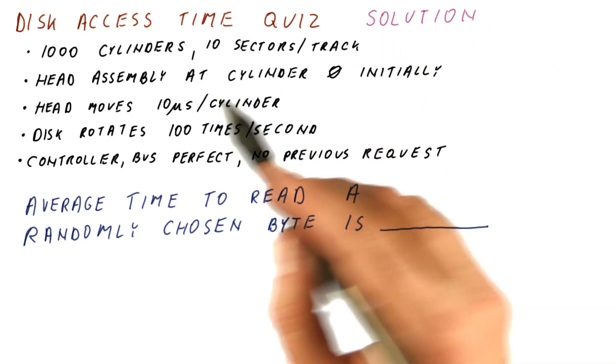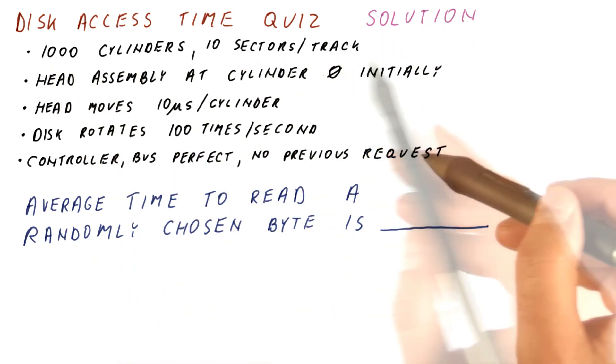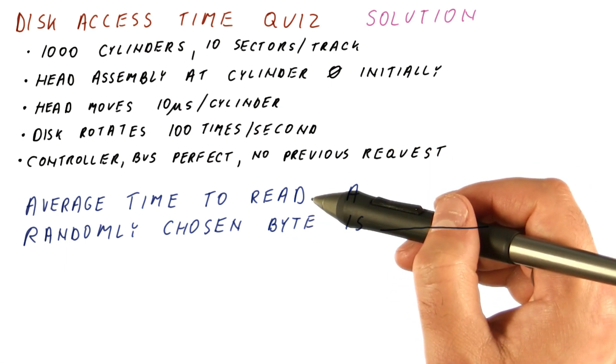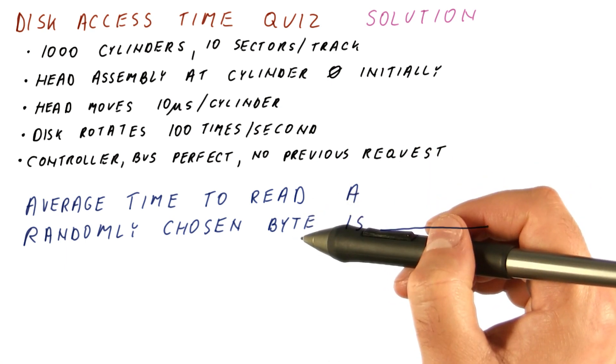Let's look at the solution to our disk access time quiz. We can ignore queuing, so our read of a randomly chosen byte begins by seeking there.